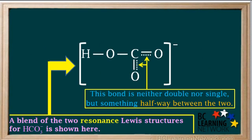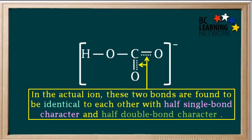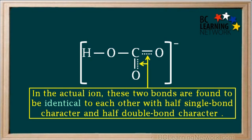Sometimes the structure is represented as a blend of the two resonance structures. The bonds are shown as a solid line and a dashed line, which represents something intermediate between single and double bonds. Notice that this is no longer a Lewis structure as the lone pairs have been removed. In the actual ion, these two bonds are found to be identical to each other, with half single bond character and half double bond character. It is important to remember that when you derive two or more resonant Lewis structures for a molecular ion, the actual species is a blend of the different resonance structures.